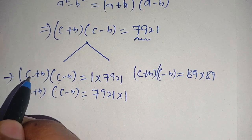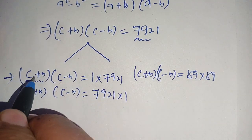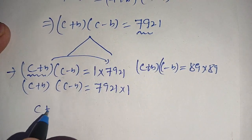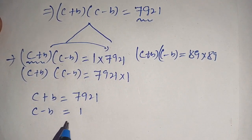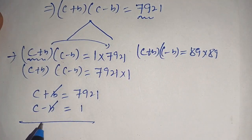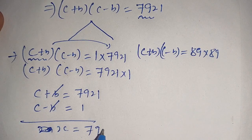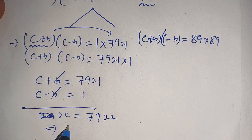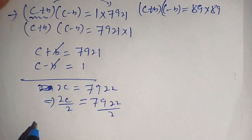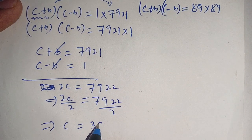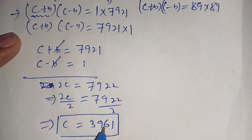In the first case, (c + b)(c − b) = 1 × 7921. Since c + b is the larger factor, we set c + b = 7921 and c − b = 1. Adding both equations, the b terms cancel and we get 2c = 7922. Dividing both sides by 2, we get c = 3961.